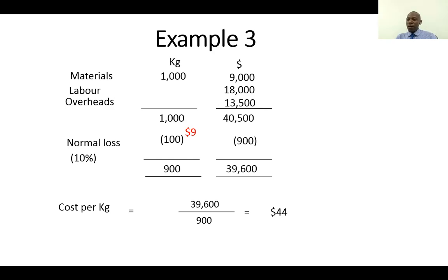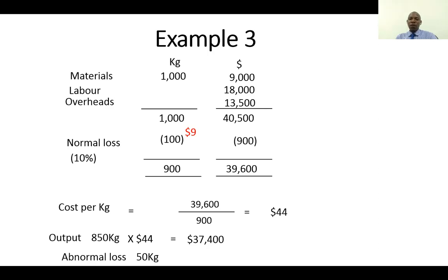Having found the cost per kg, we can value our output. The actual output is 850 kg, multiplied by the full cost of $44 per kg, giving $37,400. We are told the actual output is 850 — we expected 900 — so we have lost more. There is an abnormal loss: an excess loss. We expected to produce 900 units but actually produced 850, so the abnormal loss is 50 kg. The abnormal loss is always valued at full cost, so we multiply by $44, which gives $2,200.